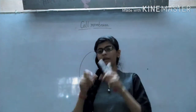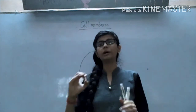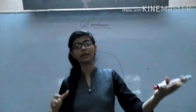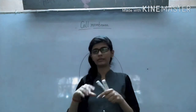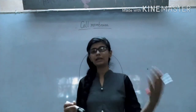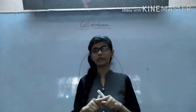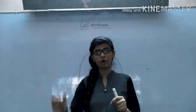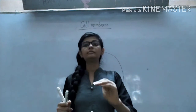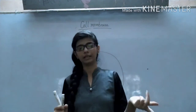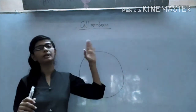In previous classes, you have done some experiments, like the onion peel experiment. When you see the cell for the first time in the microscope, you see a membrane-like structure. When you see the structure of the onion peel, you see the outer boundary — that was the cell wall. The cell membrane is present because they are plants.